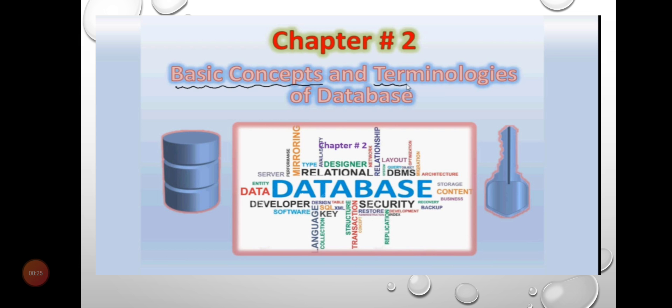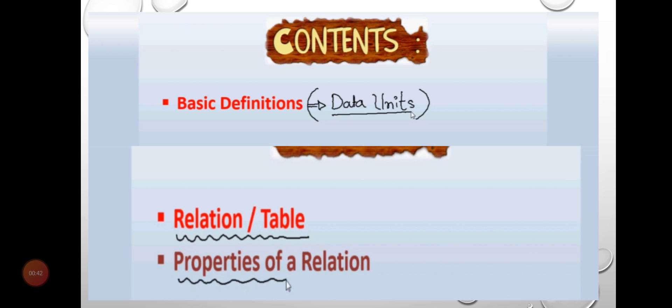Dear students, in the previous chapter we discussed files and records in detail. In fact, the concept of database evolved from the old traditional working of the file management system (FMS). Here are some contents of today's lecture: basic definitions, relation tables, and properties of the relation.